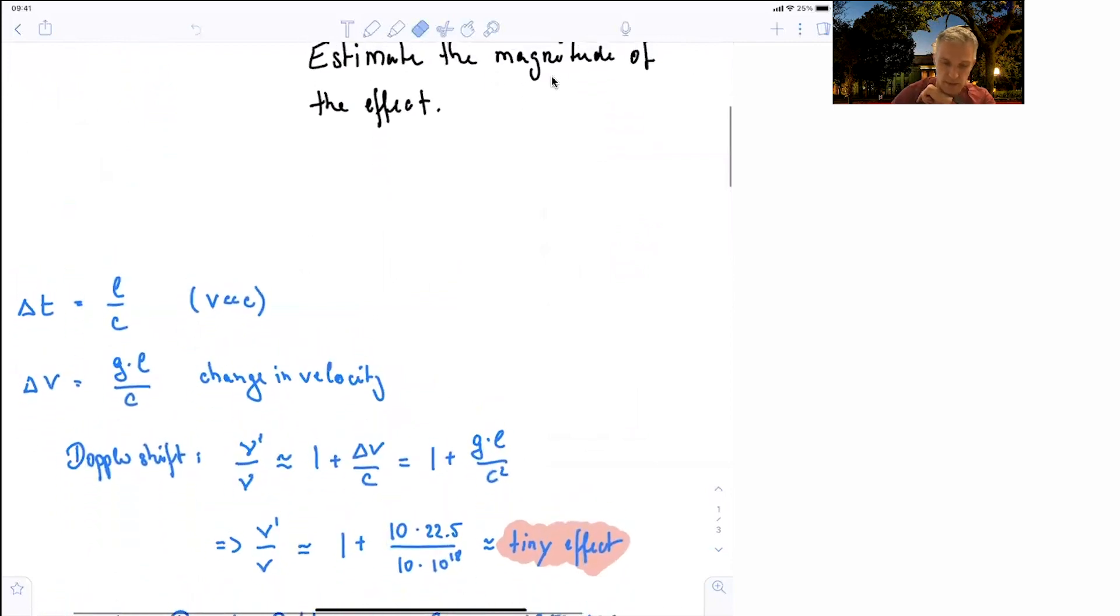The way to think about this is first to say, the delta t for the light to travel is L divided by c. The speed of light is c, the length is L. The change in velocity is g times L divided by c.